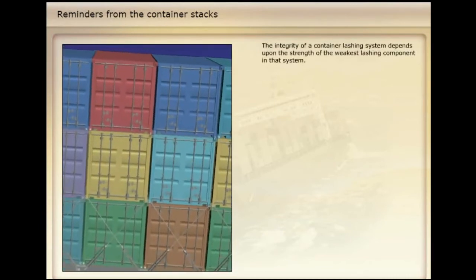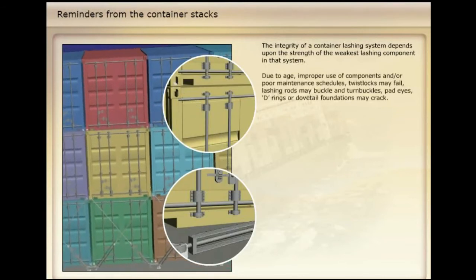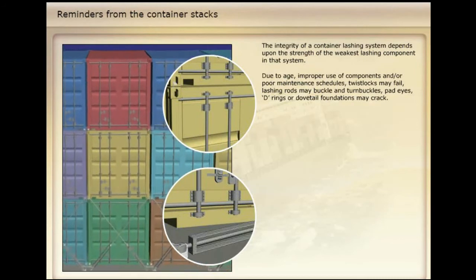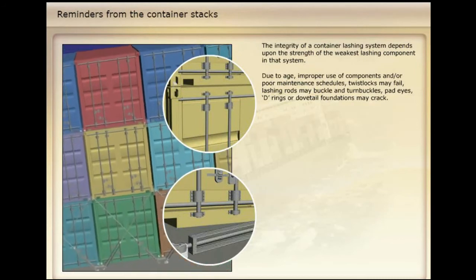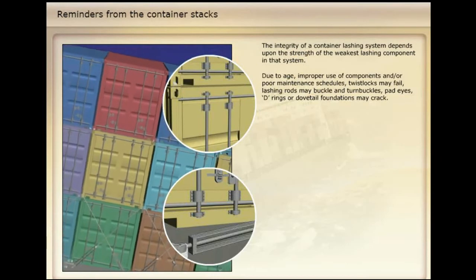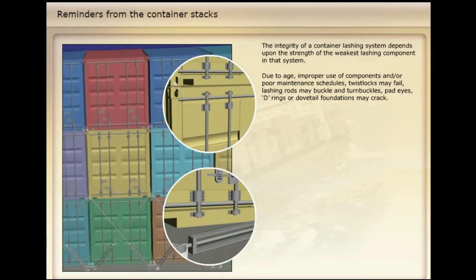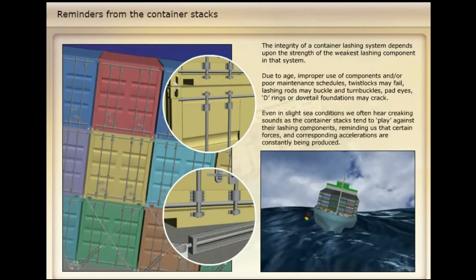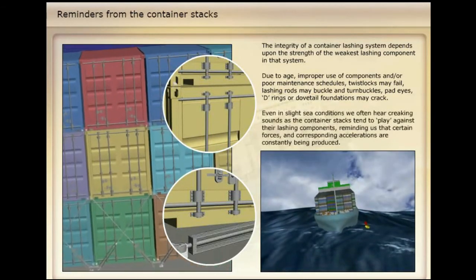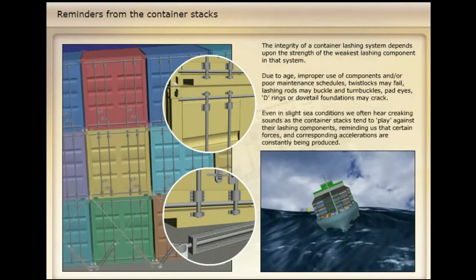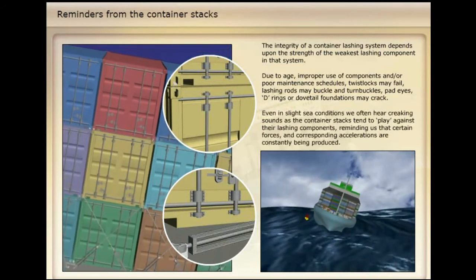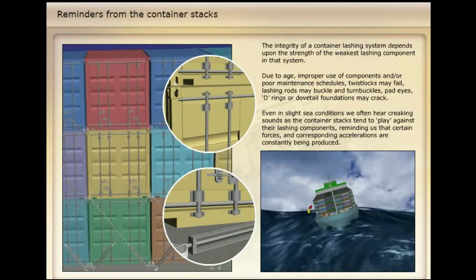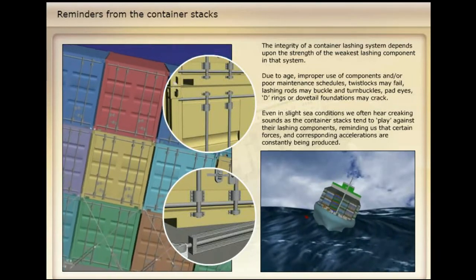The integrity of a container lashing system depends upon the strength of the weakest lashing component in that system. Due to age, improper use of components, and/or poor maintenance schedules, twist locks may fail, lashing rods may buckle, and turnbuckles, pad eyes, D-rings, or dovetail foundations may crack. Even in slight sea conditions, we often hear creaking sounds as the container stacks tend to play against their lashing components, reminding us that certain forces and corresponding accelerations are constantly being produced.